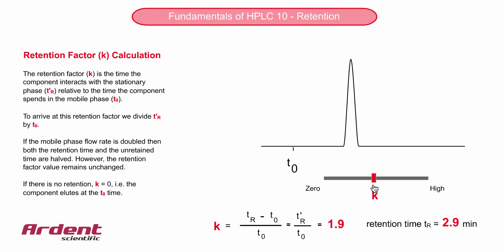relative to the time the component spends in the mobile phase, which is the unretained time. It is a ratio of the component interaction time over the unretained time. Let's go through an example with some numbers.